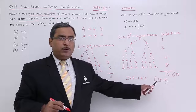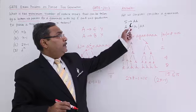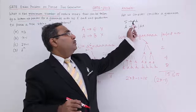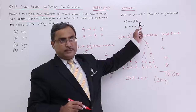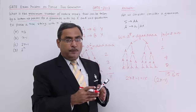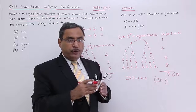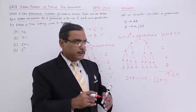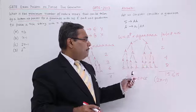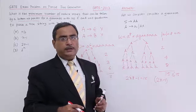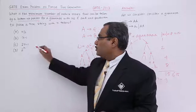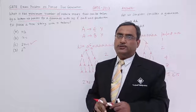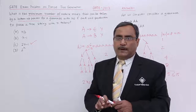That is the maximum number of moves required. If the right-hand side contains more than 2 grammar symbols, then the number of reductions required would be less. So 2n minus 1 represents the maximum number of reductions. The answer is option C: 2n minus 1. The problem has been solved.